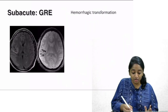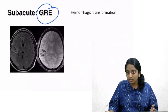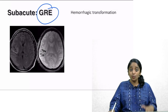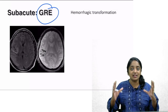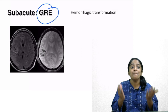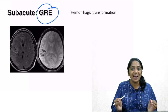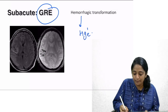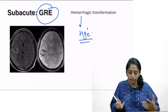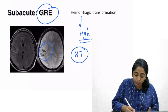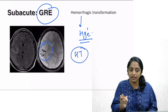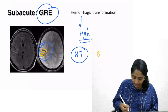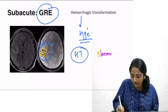Regarding GRE (gradient echo) imaging: GRE enhances substances showing magnetic susceptibility or magnetic inhomogeneity, one of which is hemorrhage. So hemorrhagic transformation is beautifully depicted in GRE images, appearing as black areas — known as blooming areas.